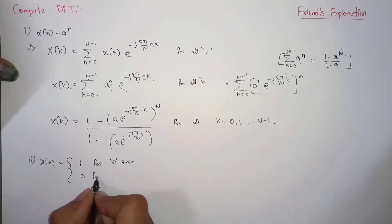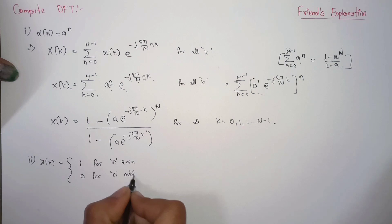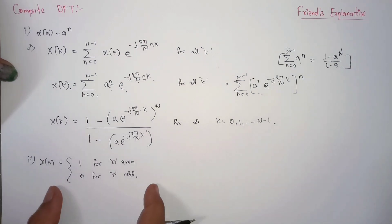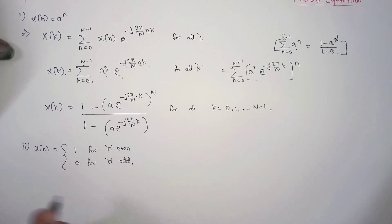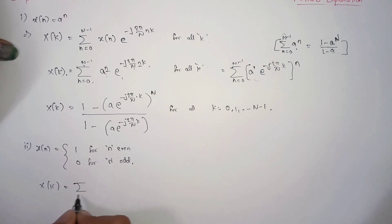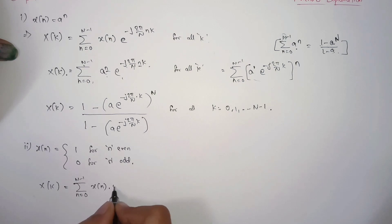Now let's take another problem. We have a signal that is 1 for even n and 0 for odd n. Let's find the Discrete Fourier Transform of this signal. The formula is: X(k) equals summation from 0 to N minus 1 of x(n) times e to the power of minus j 2π/N times nk.